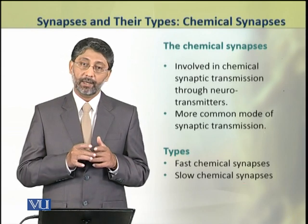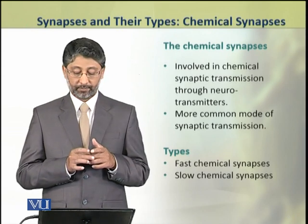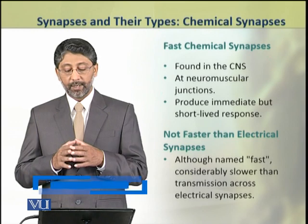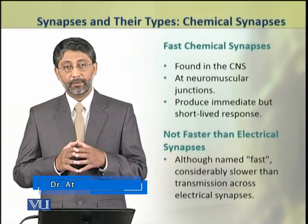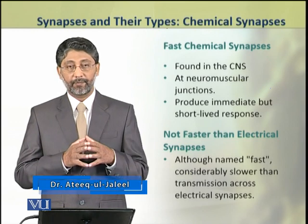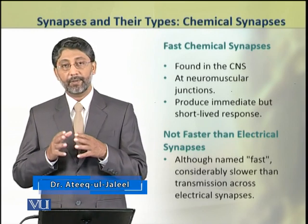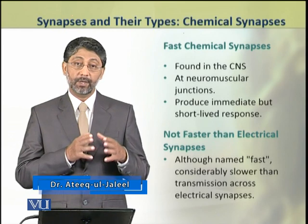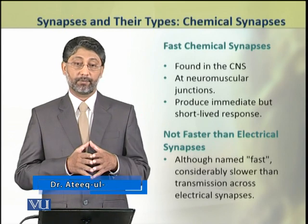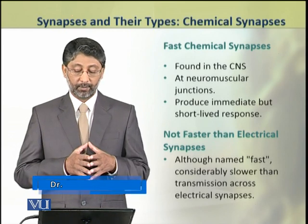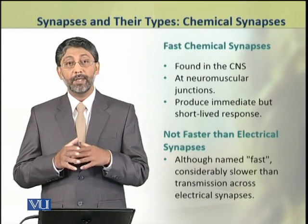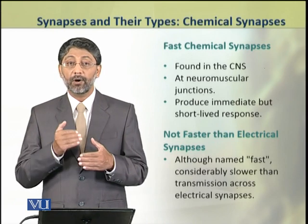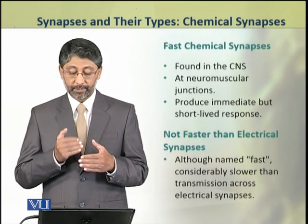Fast chemical synapses are present in the central nervous system and at neuromuscular junctions. They produce immediate but short-lived responses.